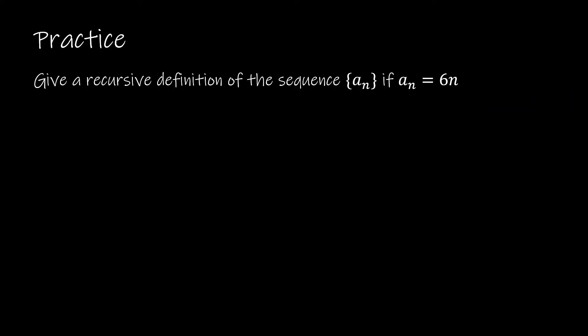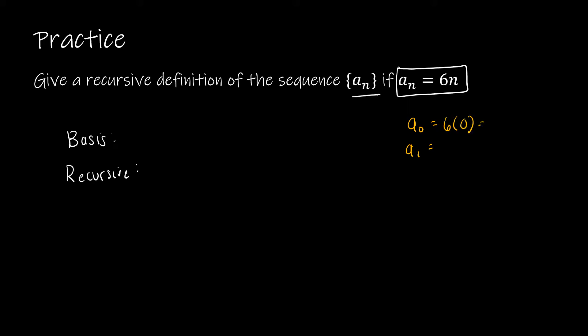For this first practice, instead of finding the first few terms of a sequence that's already been defined for us, they're asking us to find the recursive definition of a sequence. They give us the fact that the sequence a(n) is found by taking 6 times n for each value of n. We need the basis step and the recursive step. Let's find a few values: a(0) = 6·0 = 0, a(1) = 6·1 = 6, a(2) = 6·2 = 12, a(3) = 6·3 = 18.